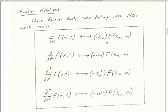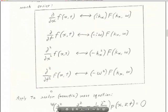You'll use other theorems besides the derivative theorems, but this is just how the derivative theorems work. If you take the x-derivative of the pressure field, then in the Fourier domain that's the same as multiplying the 2D Fourier transform of the pressure field by the complex number i·kₓ. For the time derivative, the Fourier dual is multiplication by −iω. The Fourier dual of the second derivative in x is multiplication by −kₓ², and the Fourier dual of the second time derivative is multiplication by −ω².